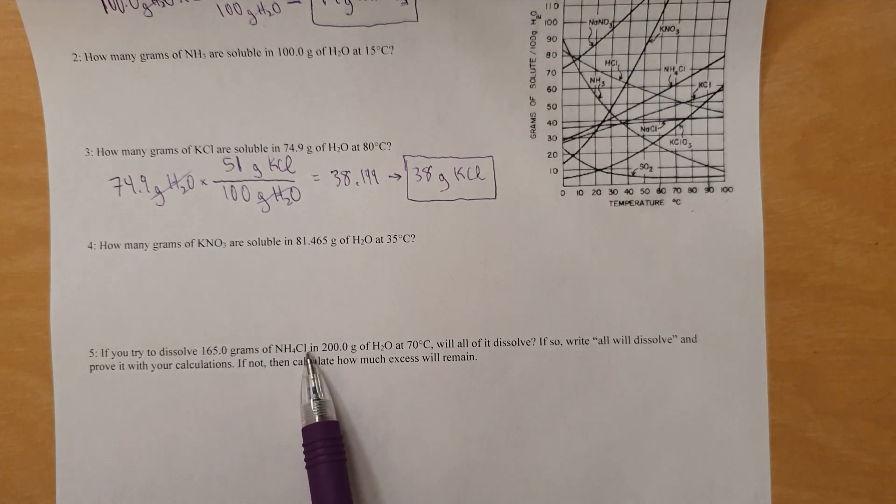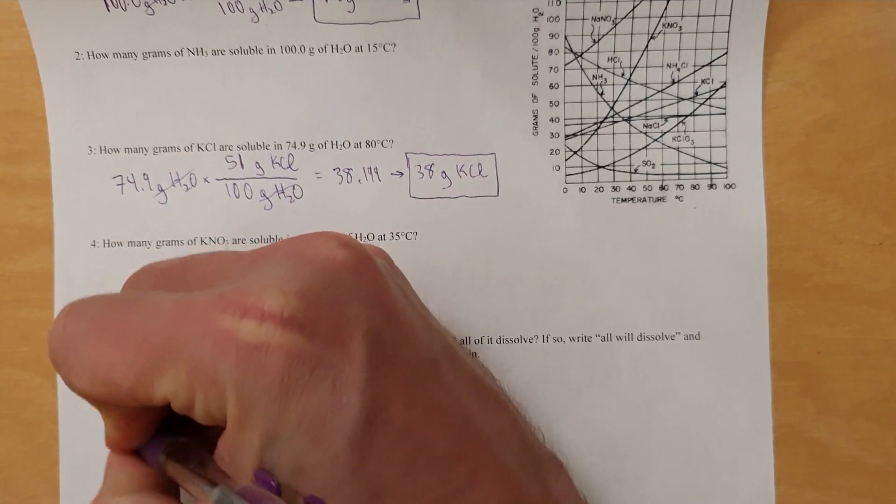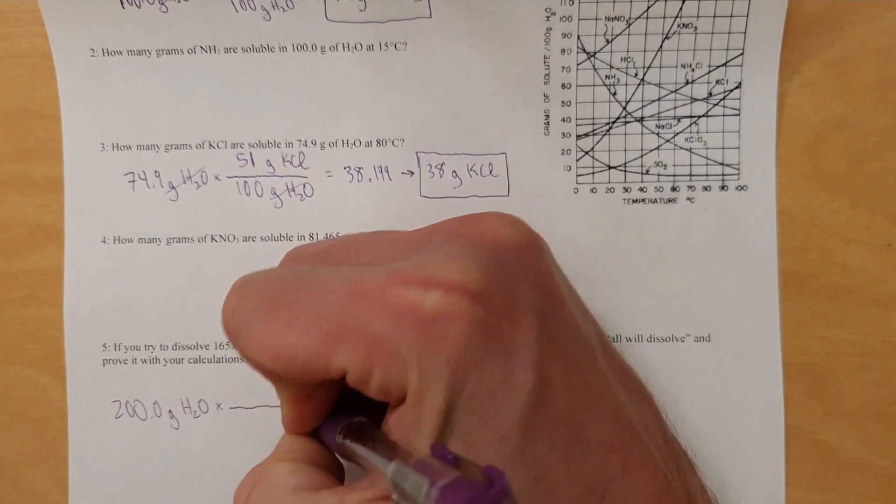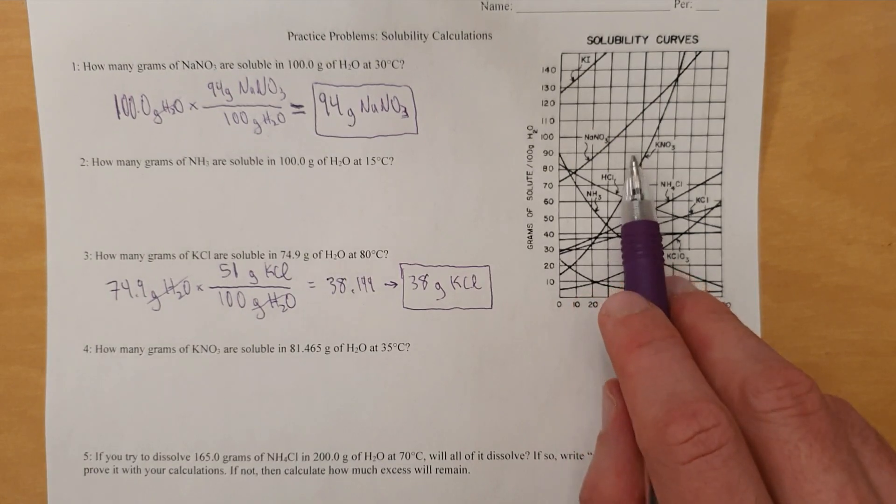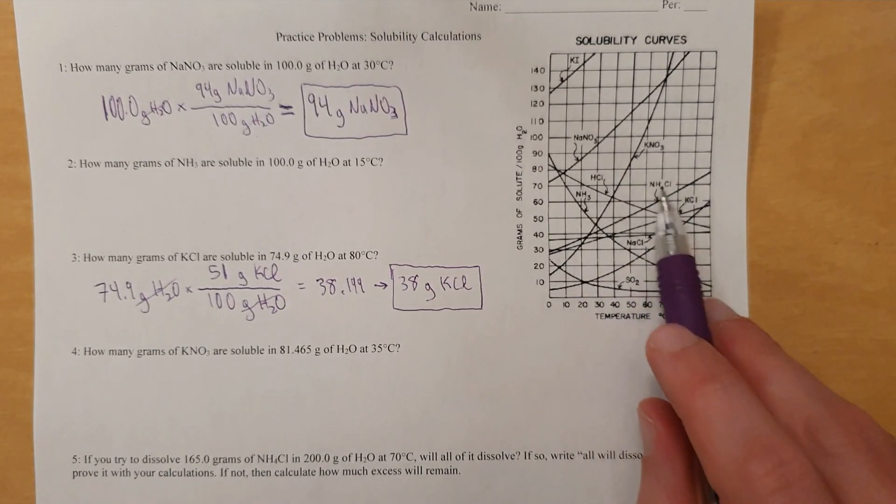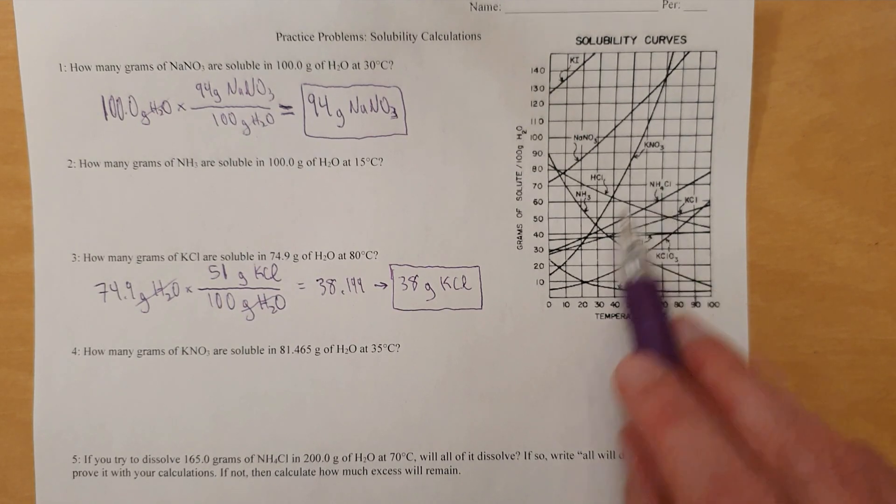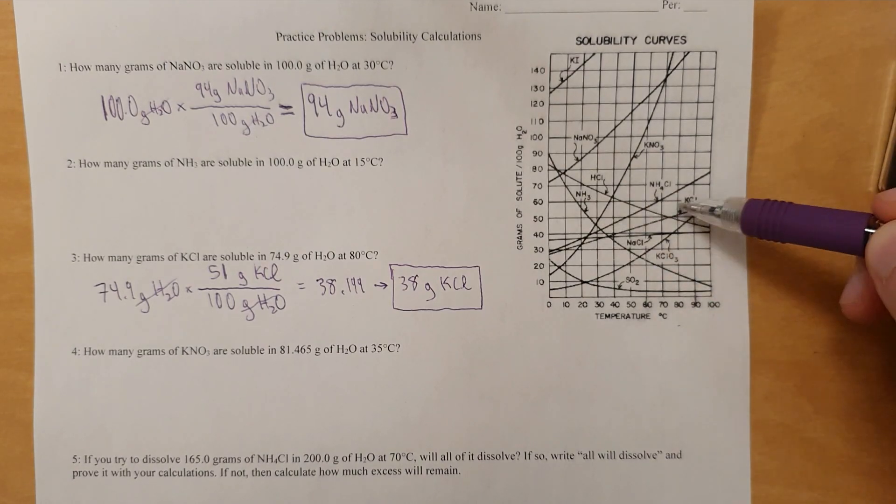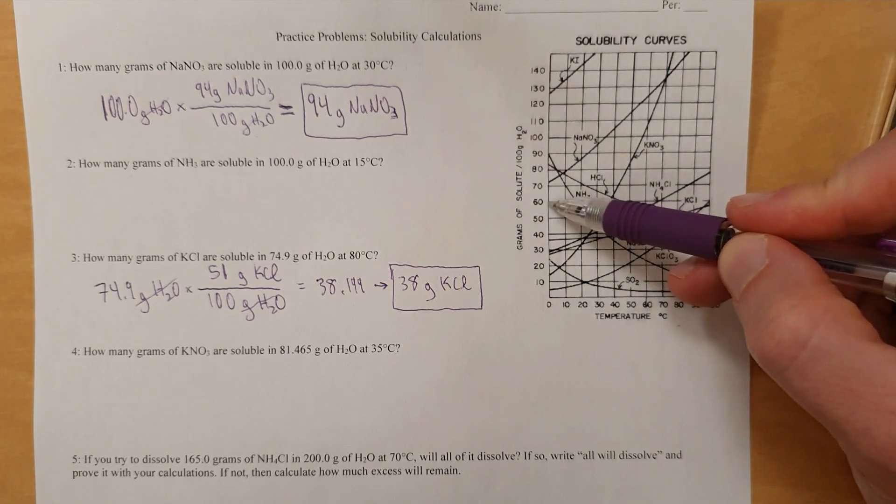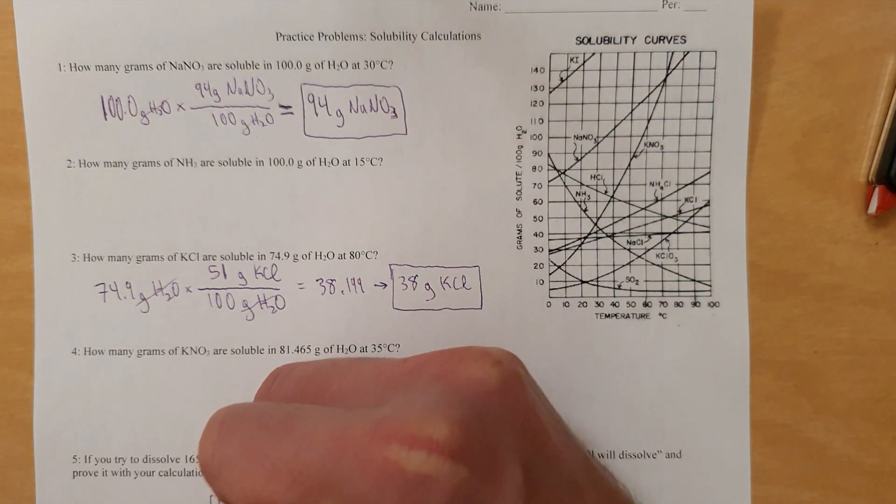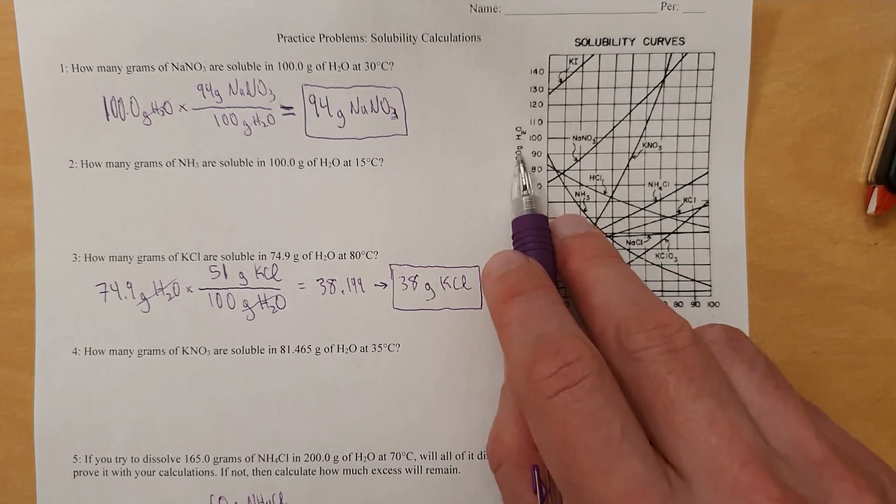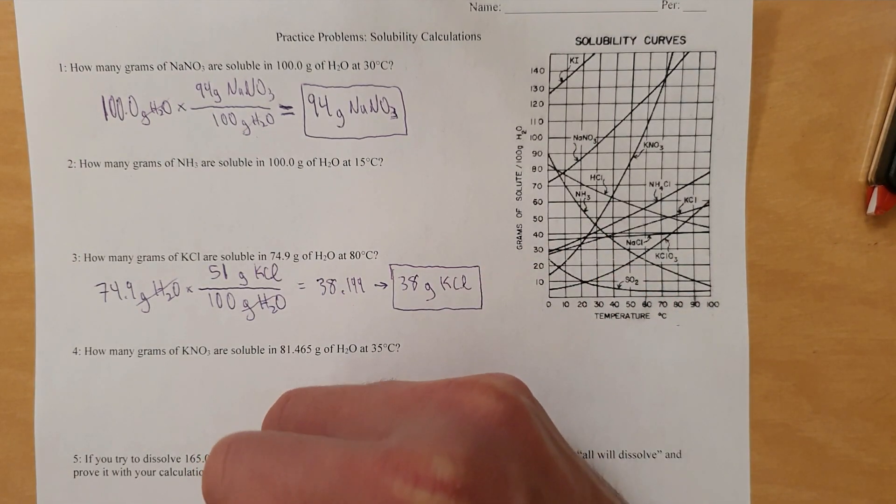So let's do that. Well, 200 grams of H2O. 200.0 grams of H2O. And I'm going to multiply that by, okay, ammonium chloride. Let's find that. Where's ammonium chloride? Ammonium chloride is right here. All right, and we want to find it at 70 degrees Celsius. So I've got to find 70 degrees Celsius, trace it up, intersects right here. That's almost right on the 60 line. So I'm going to say 60 grams of ammonium chloride, because it's 60 right here, and it's grams of solute, and the solute is ammonium chloride. And then per 100 grams of water, don't forget the 60 grams of this per every 100 grams of water.